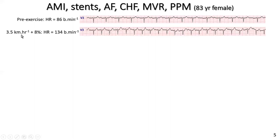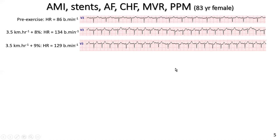When she went to exercise at 3.5 kilometers per hour at an 8% gradient, her heart rate had risen to 134. You can't actually see the P waves clearly because there's such a long duration between the P wave and the R wave — a lot of the P waves are buried in the previous T waves. The amount of AV nodal block is actually varying going from the resting condition to the exercise condition, which makes it quite difficult to interpret.